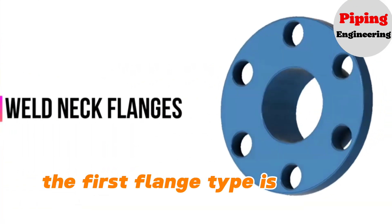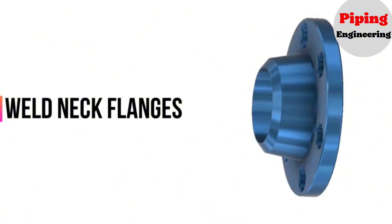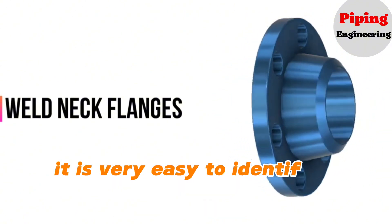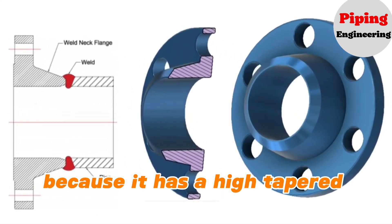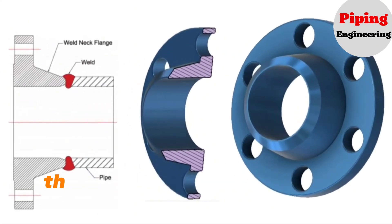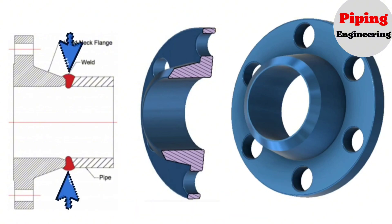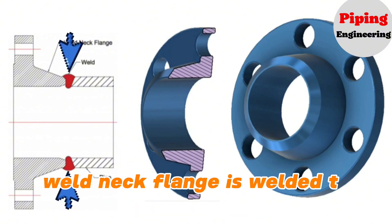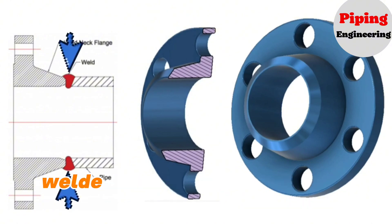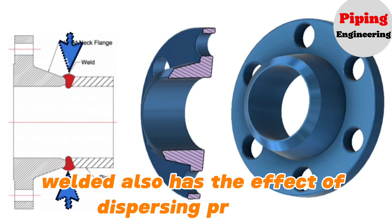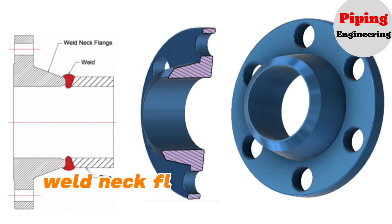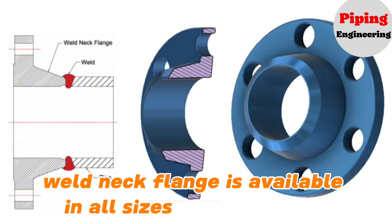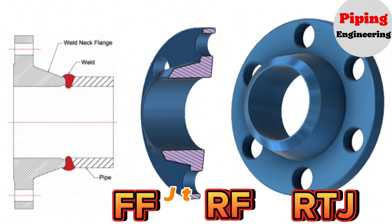The first flange type is a Weld Neck Flange. It is very easy to identify a Weld Neck Flange from the appearance because it has a high, tapered hub like a neck. This neck will be welded with the pipe, so it has the same wall thickness as the pipe. Weld Neck Flange is welded to pipe with full penetration weld, and it also has the effect of dispersing pressure, making the pipe less deformable. Weld Neck Flange is available in all sizes and it can be FF, RF, or RTJ type.